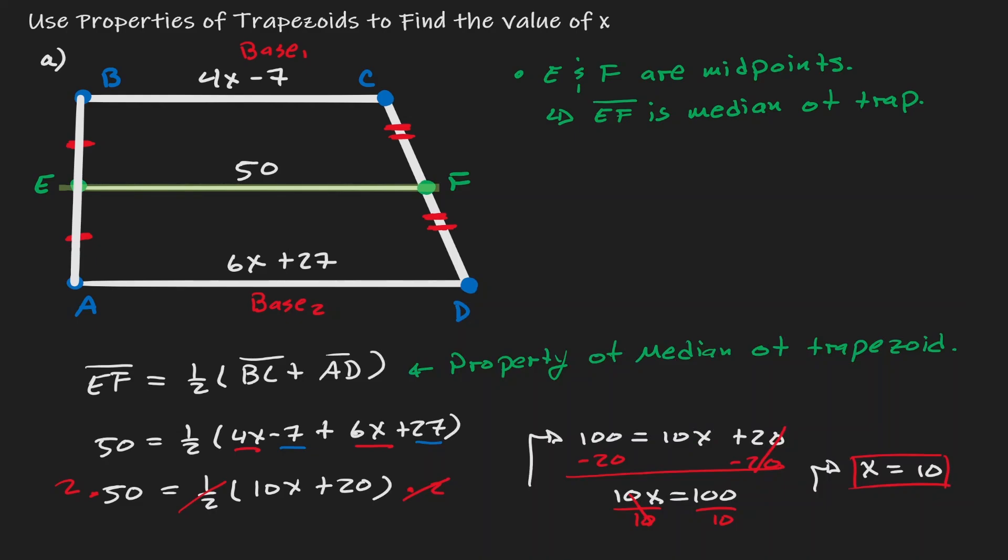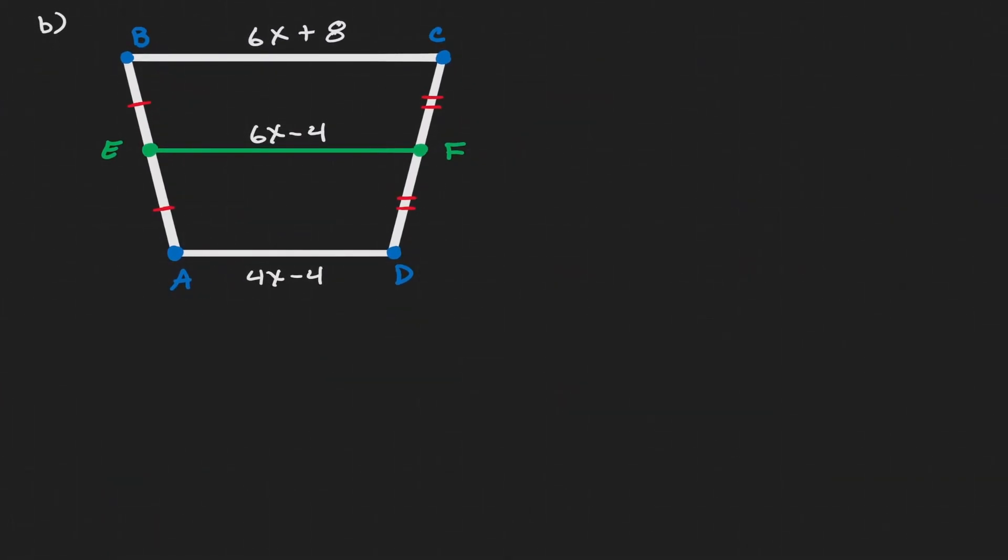Now let's take a look at a second example. Let's start by looking at the notation. Notice that BE is congruent to EA, and CF is congruent to FD. And if that is the case, then E and F are midpoints, and therefore we can conclude that EF is the median of the trapezoid.